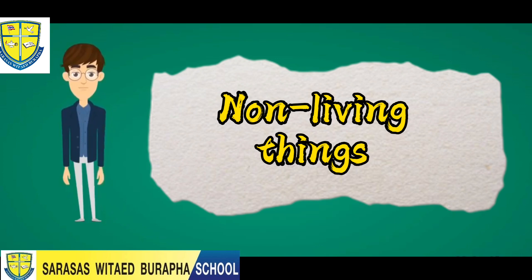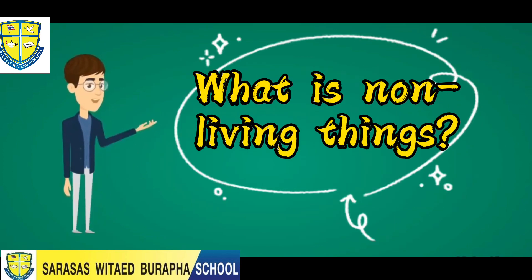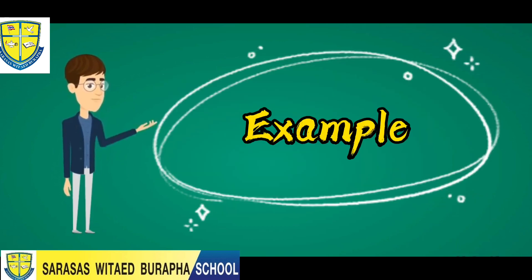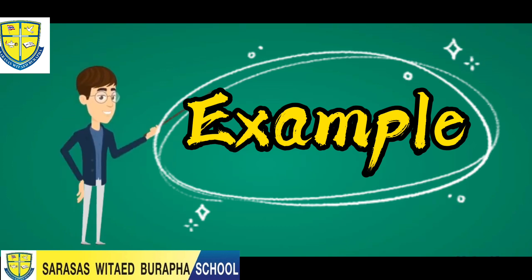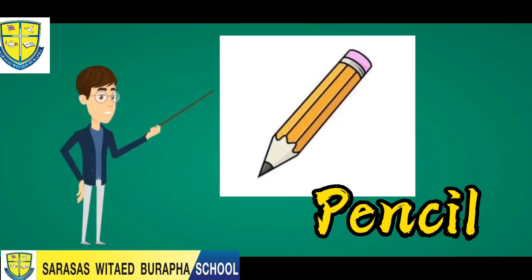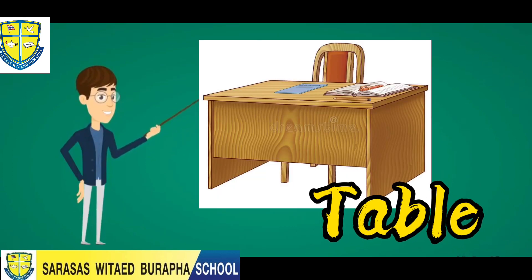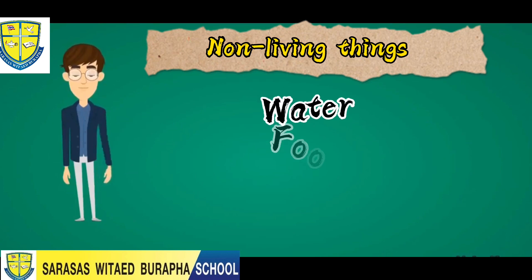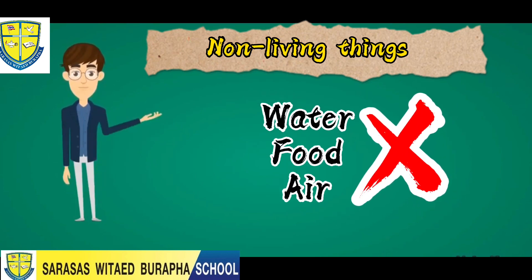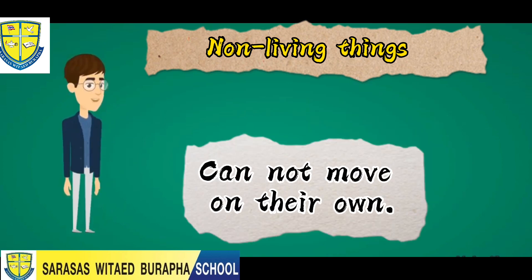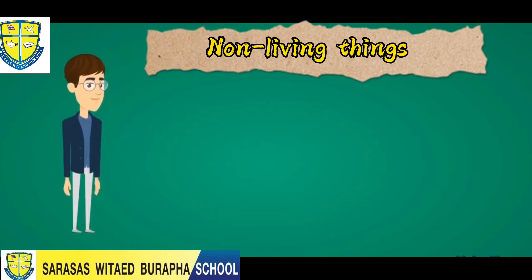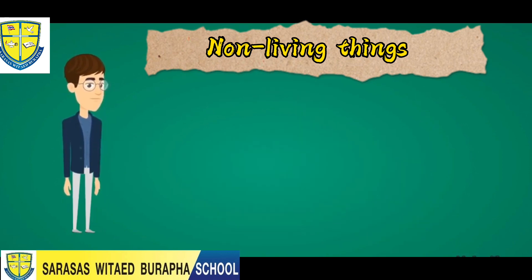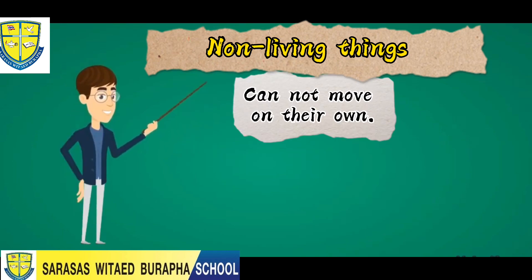Now let's also tackle the opposite of living things, which is non-living things. Non-living things is anything that was never alive. Non-living things cannot move on their own, they cannot make new non-living things, and they don't have the ability to grow.